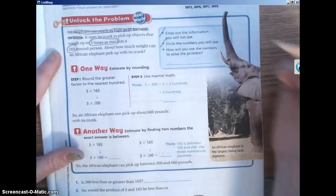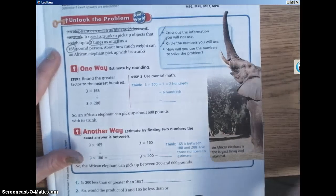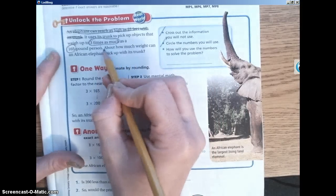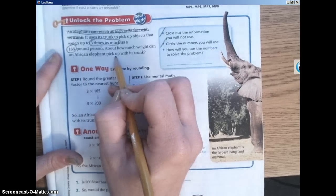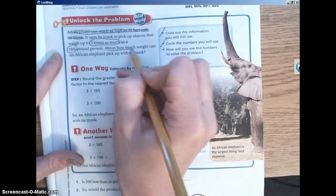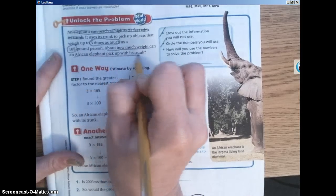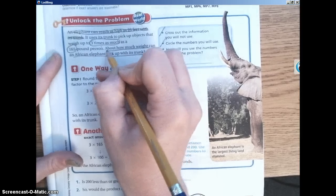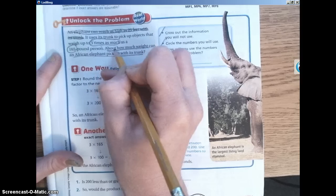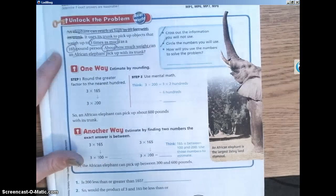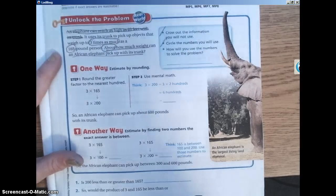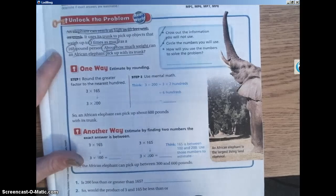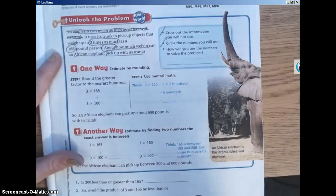I'm also going to ask you to underline what you need to find. About how much weight can an African elephant pick up with its trunk? That's what we're looking for. That's what we need to find. And I'm going to go ahead and circle about, too. Because to me, that is a key word. When I hear the word about, I'm thinking, oh, that means I'm going to estimate. I'm not finding an exact answer. I'm instead finding a ballpark or an estimate.